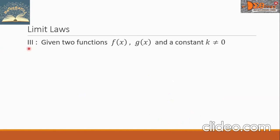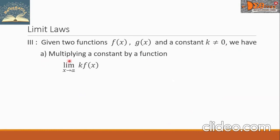Law number 3: given two functions f of x and g of x, and a constant k not equal to 0. Letter A — multiplying a constant by a function. The limit of k times f of x as x approaches A: we can take the limit of f of x as x approaches A and then multiply it by k. So we have k times the limit of f of x as x approaches A.